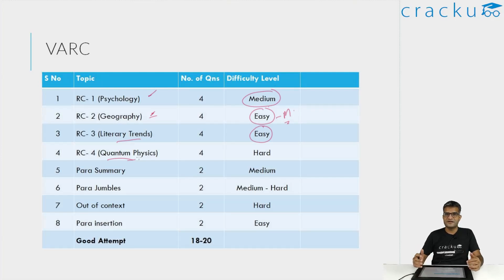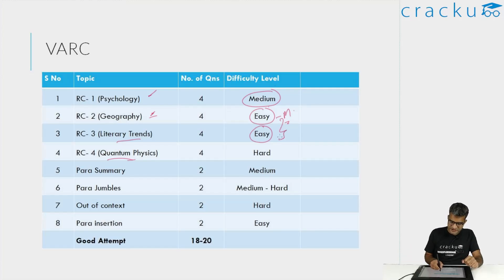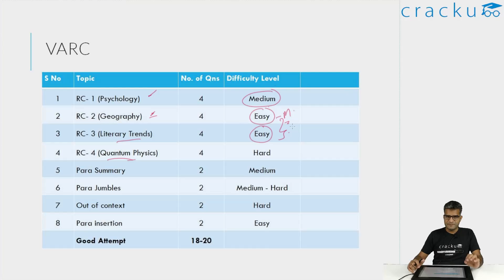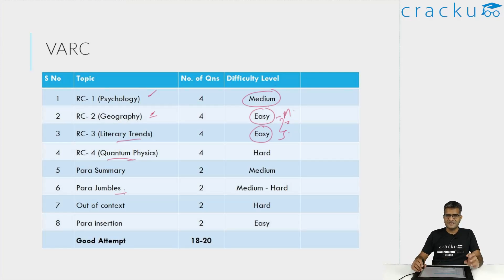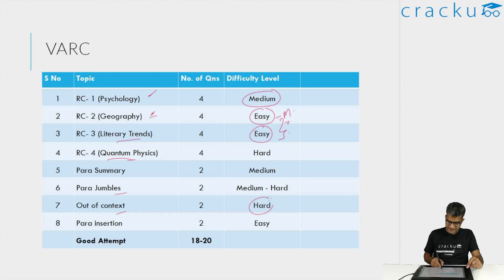This is definitely not a very difficult verbal section. Like I mentioned, the geography and opera RCs were on the easier side. Para summary was definitely on the medium side — not very difficult. There was one para jumble which I felt was easy, but there was one para jumble which was slightly difficult where I thought I got it correct but it was not right. Amongst the other question types, out of context I felt was definitely hard, because both of the questions I got wrong.